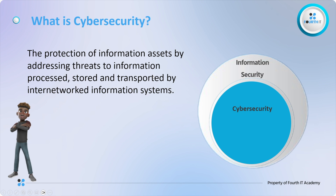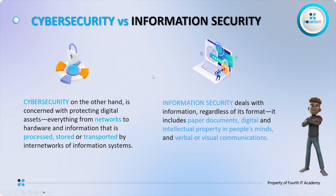Many companies confuse or use these two terminologies the same way — information security and cybersecurity. But I want to break it down. Cybersecurity is the protection of assets by addressing the threats to information that is being stored, processed, or transmitted by a network. Information security, on the other hand, is the big umbrella that cybersecurity falls under. Cybersecurity just deals with electronic data, but information security deals with both electronic and non-digital data.